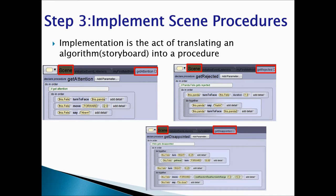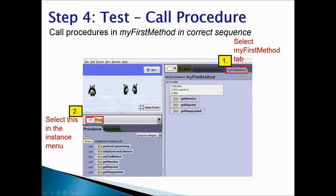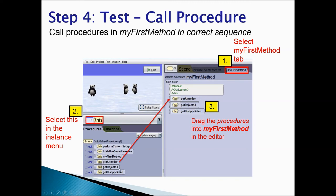Once we have our three or four procedures created, we will test by calling the procedure in myFirstMethod. We would first select the myFirstMethod tab, then select this in the instant menu so that this refers to the scene. Then we would drag getAttention, getRejected, and getDisappointed into the myFirstMethod editor area. The last step is to click Run to test if our program works correctly.